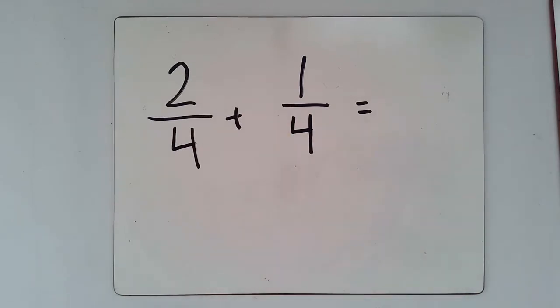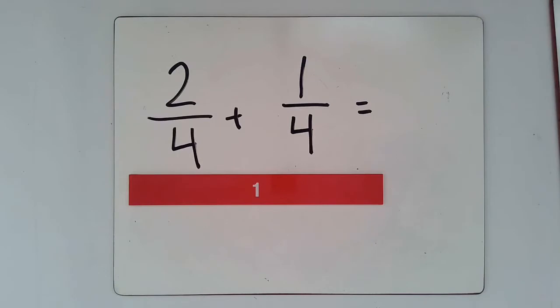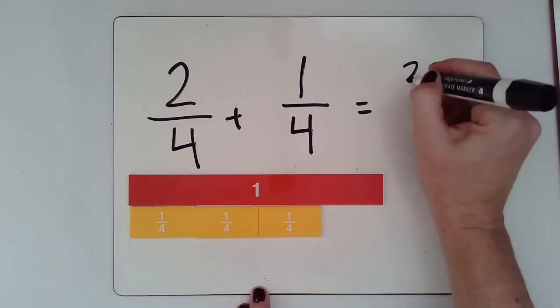So let's go ahead and move up, of course we have our one whole here. I'm going to have my two fourths there. And if I add one more fourth to it, I'm going to have a total of one, two, three, three fourths.